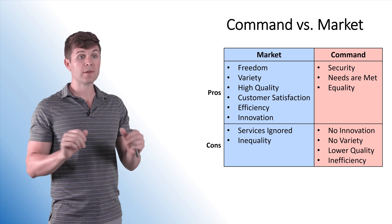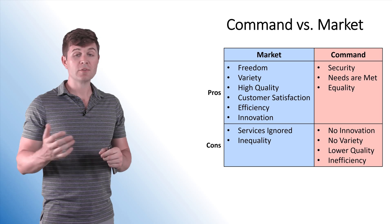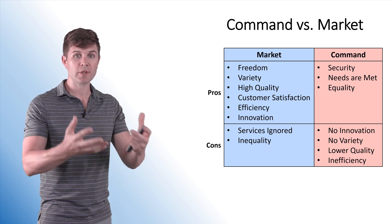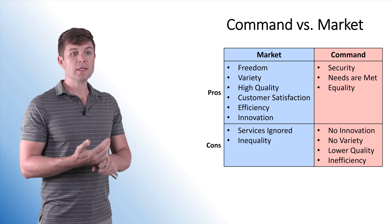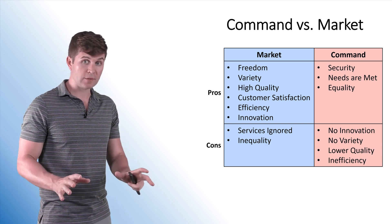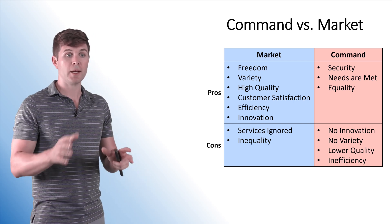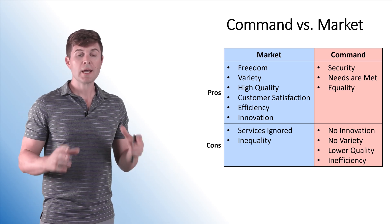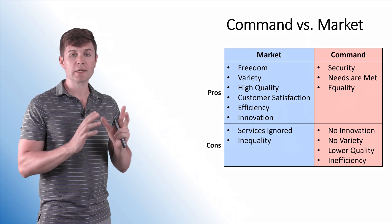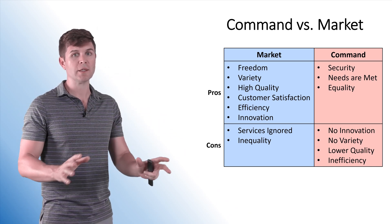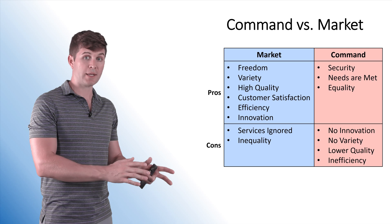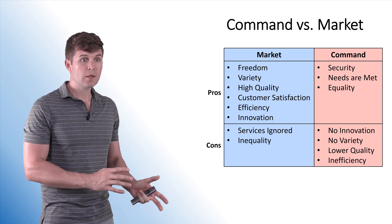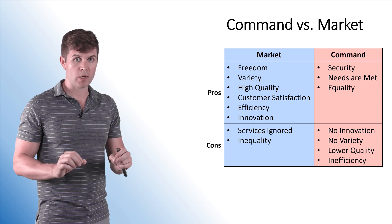Now, let's get on to the command. Security. People are taken care of. The government provides them what they need. They put in their effort and they're taken care of. Needs are met in most cases. I know there are real life examples, but in theory, a command economy, everybody's taken care of. And equality. On paper, in theory, a command economy provides equality, which a market economy might not. A market economy might provide equal opportunity, but command produces equality.